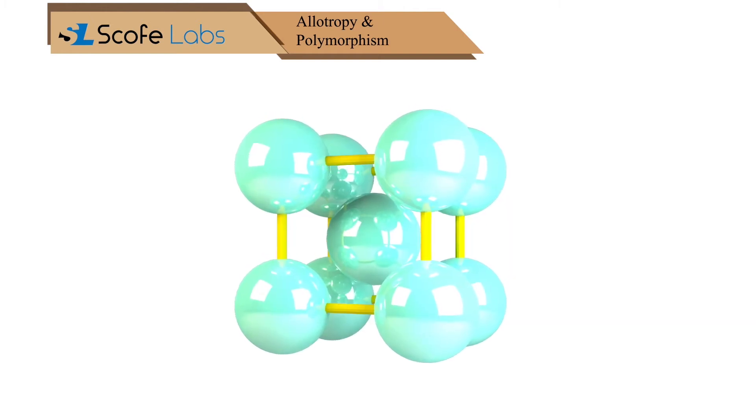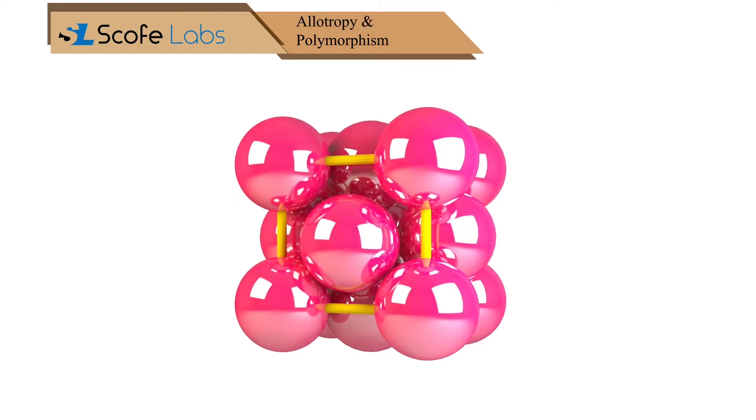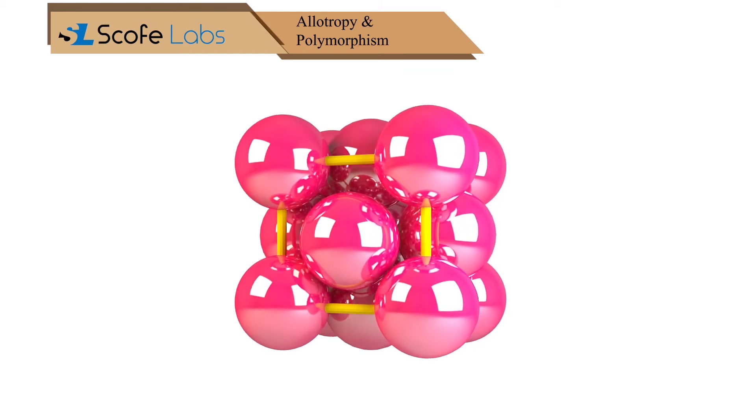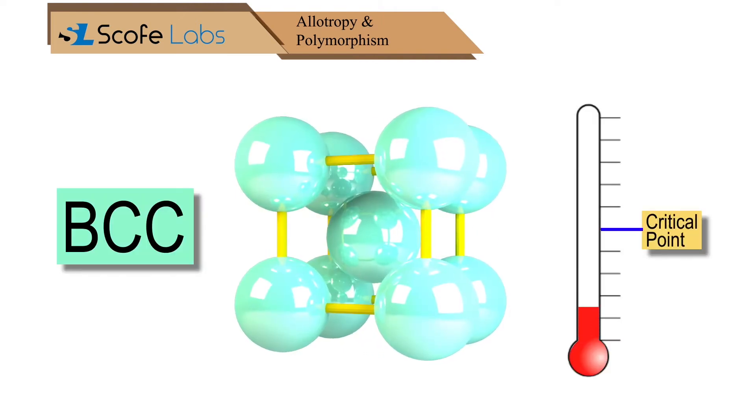Allotropy is the property of an element in which the element has the ability to transform or change its form with different atomic structure. As the temperature increases to the critical point called transformation temperature, the space lattice changes.